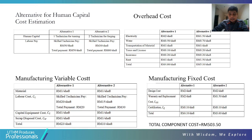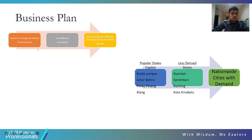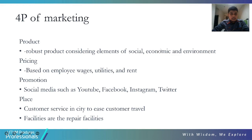Next is our business plan. We can see that changing the battery cost efficiency could increase the efficiency during training sessions for athletes. For the 4P of marketing: Product — a robust product considering elements of social, economic, and environmental sustainability. Pricing is based on employee wages, utilities, and rent. Promotion will be through social media such as YouTube, Facebook, Instagram, Twitter, and other areas of promotion. Place — customer service centers in the city to ease customer travel, with repair facilities available. That is all for me. Thank you.